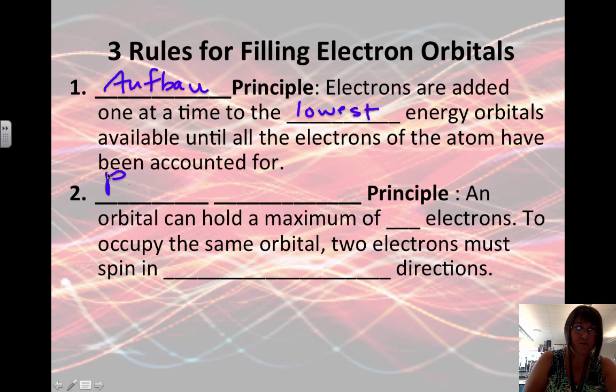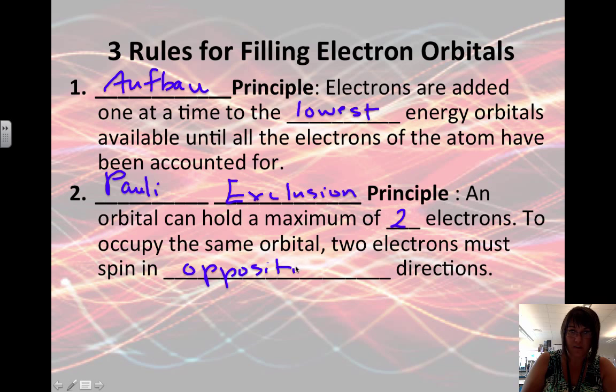The Pauli exclusion principle states that an orbital can hold a maximum of 2 electrons each. And to occupy the same orbital, they must spin in opposite directions, or they don't get to be in the same orbital at the same time.